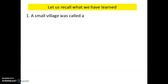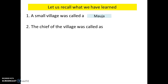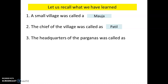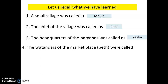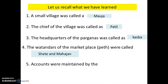Let us have a quick recapitulation. A small village was called a Mauja. The chief of the village was called the Patil. The headquarters of the Pargana was called the Kasbah. The vatandars of the marketplace or Pate — there were two of them — were the Shete and the Mahajan. The accounts were maintained by the Kulkarni.